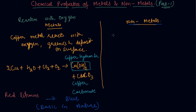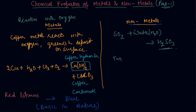Now coming to the non-metal part. Let's take the example of sulfur. When sulfur mixes with oxygen it makes an oxide called sulfur dioxide (SO₂). When sulfur dioxide comes in contact with water (H₂O) it makes sulfuric acid. This sulfuric acid turns blue litmus paper to red, meaning it is acidic in nature.